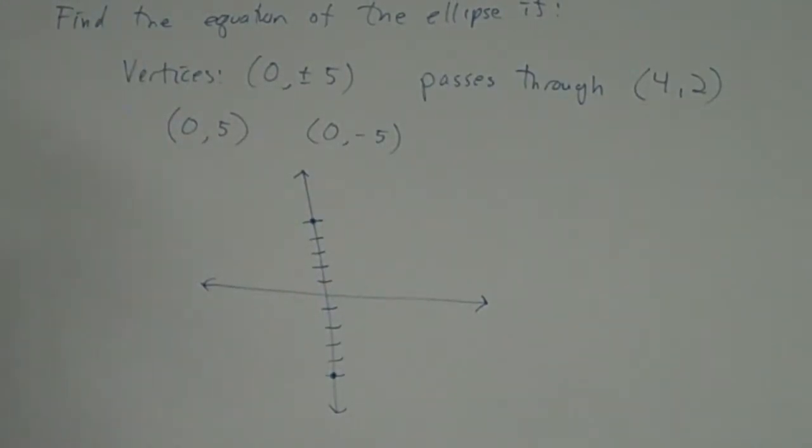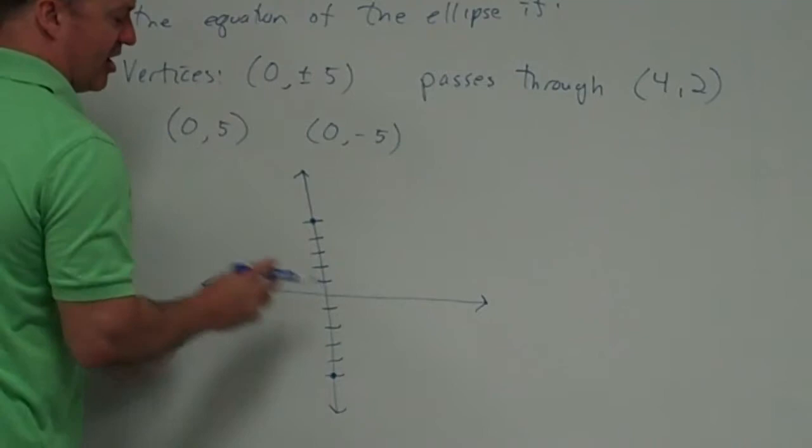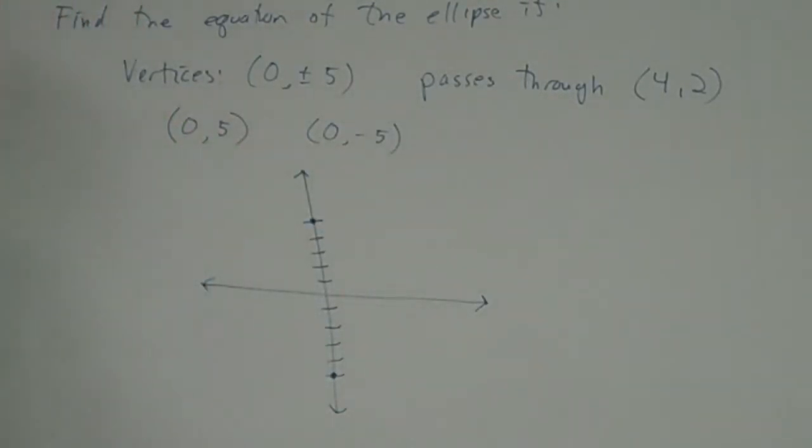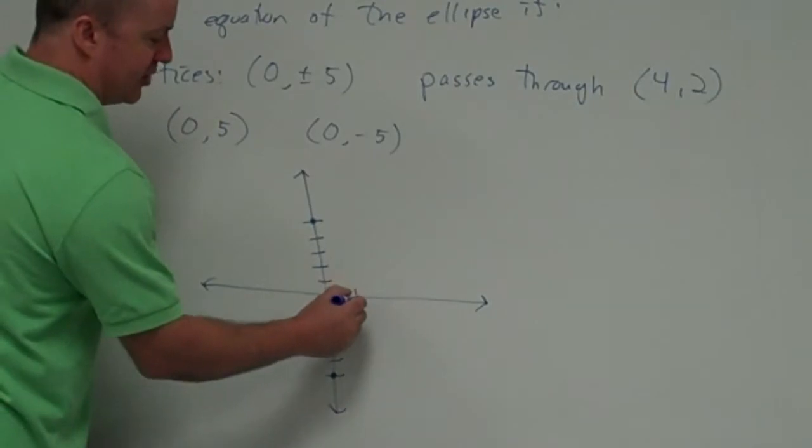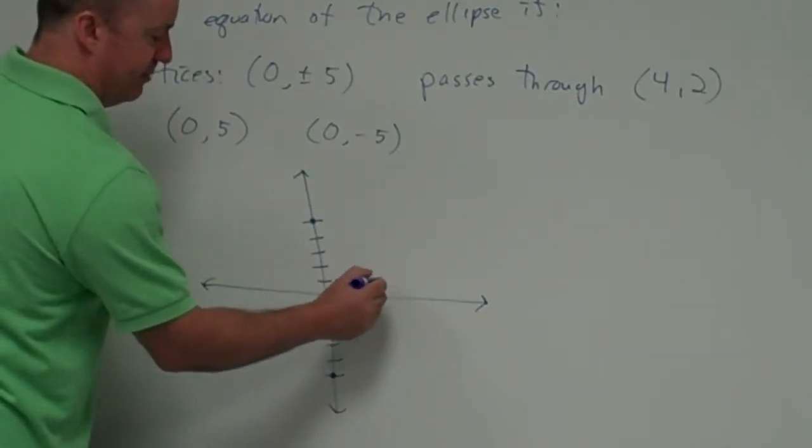Do I know if it's longer than it is wide or wider than it is long from this information? No, not yet. Nope. It could be very skinny like a cigar. It could be stretch out for miles. I do know it passes through the points 1, 2, 3, 4, 2.